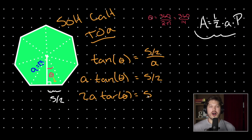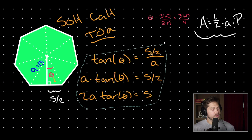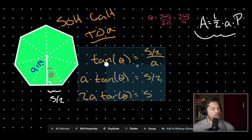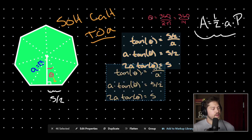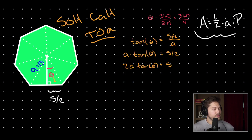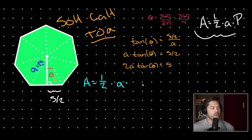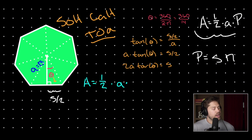Now we have enough information to solve for the area of our regular polygon. We have our side length, and to find our perimeter we simply multiply our side length by the number of sides. The area formula is one-half times our apothem times our perimeter — but what is the perimeter but your side length times the number of sides? So we multiply by s, which we found to be 2 times our apothem times the tangent of theta, and then multiply by n.